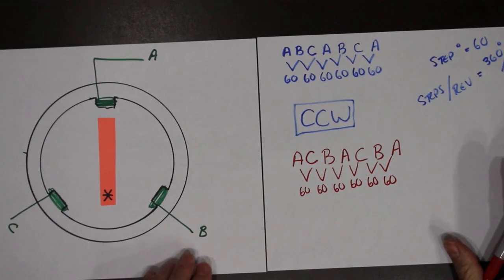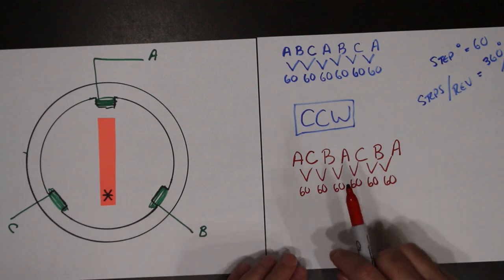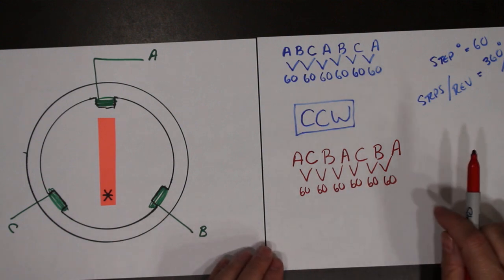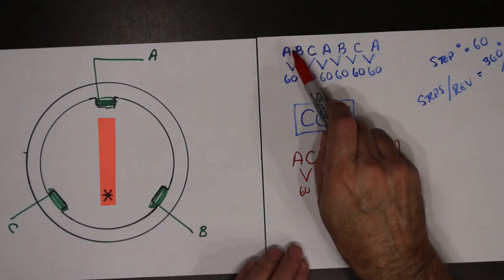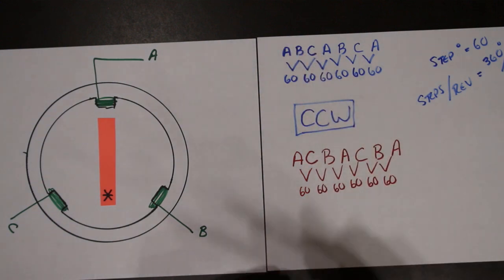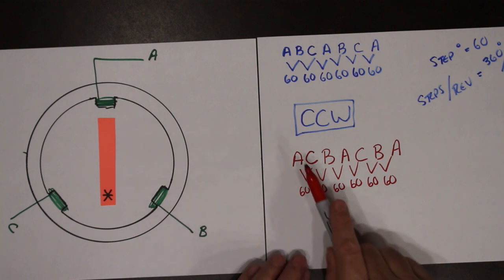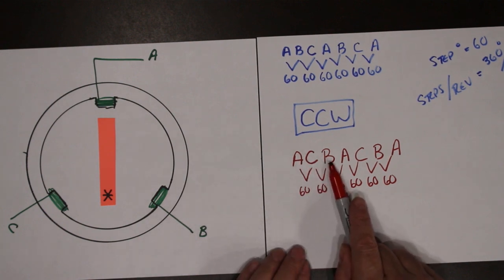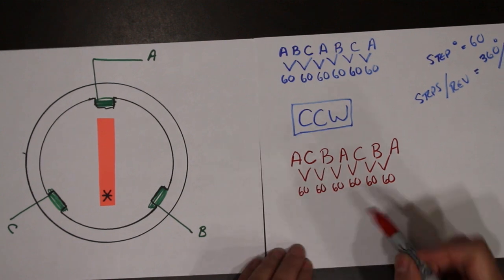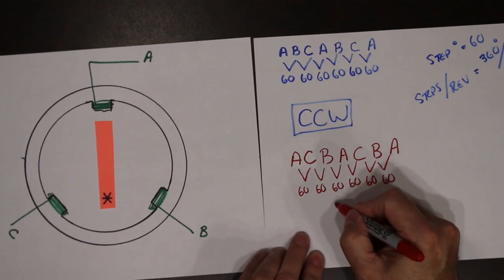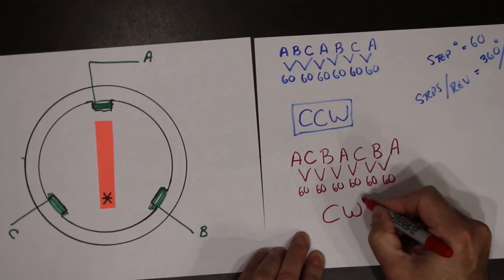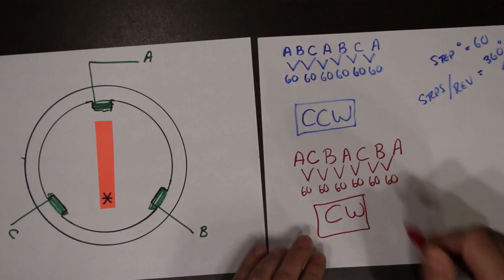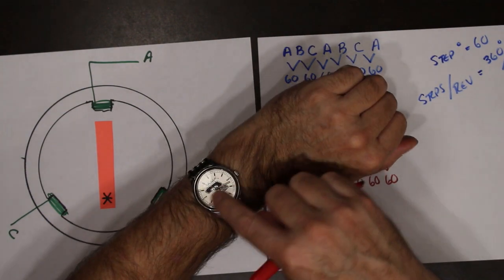To change direction of a stepper motor, all you need to do is change the sequence. Here I went A, B, C. If I go A to C, then to B, I have changed direction. This will get me a clockwise rotation.